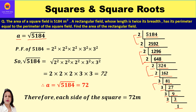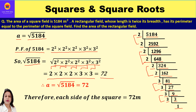Continuing: 81 ÷ 3 = 27, ÷ 3 = 9, ÷ 3 = 3, ÷ 3 = 1. We factorize until we get 1. Now make pairs: 2×2, 2×2, 2×2, 3×3, 3×3. So the prime factors of 5184 are 2² × 2² × 2² × 3² × 3². Taking one factor from each pair and finding the product gives us 72. So each side 'a' = √5184 = 72 meters.